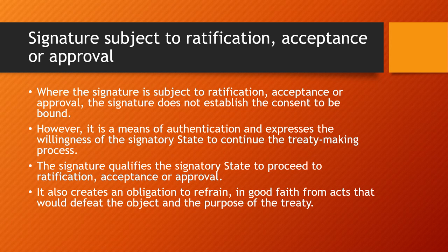The signature also creates an obligation to refrain in good faith from acts that would defeat the object and purpose of the treaty. A state is given time before they can ratify and fully implement it at the state level, because a convention brings about many changes that can be challenging to implement quickly. States express interest, then go back and discuss the terms with stakeholders — ship owners, seafarers, charterers, and regulators — note their concerns and queries, and bring them forward to the IMO. This allows the state to gradually understand and implement the convention incrementally.